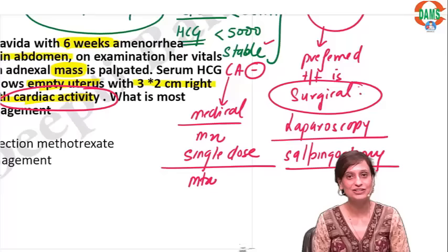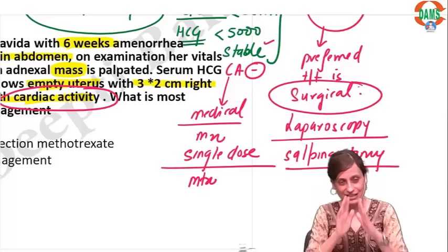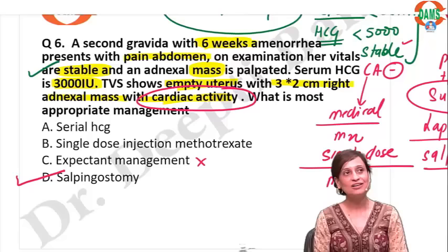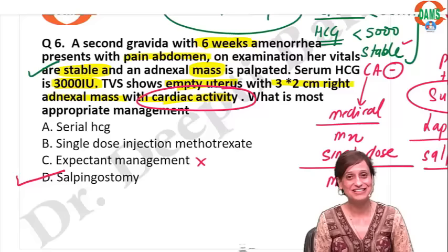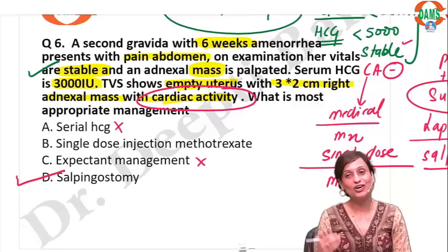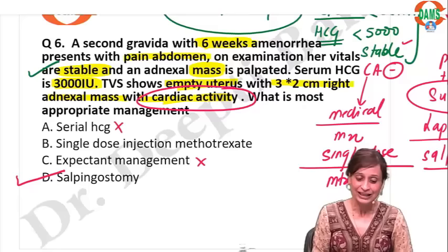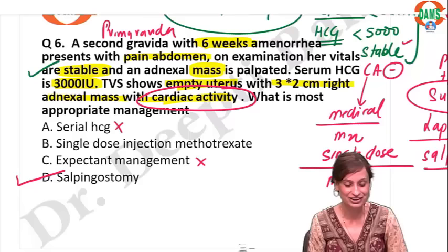The answer is salpingostomy. Expectant management is done when you don't see any mass and the HCG value should be less than 200 with a falling trend, and no sac should be visible — the patient must be hemodynamically stable. We can't do serial HCG — we already know there is a pregnancy outside with cardiac activity. Even if the question says primigravida or multigravida, gravidity is no criteria for treatment; the answer would remain the same.